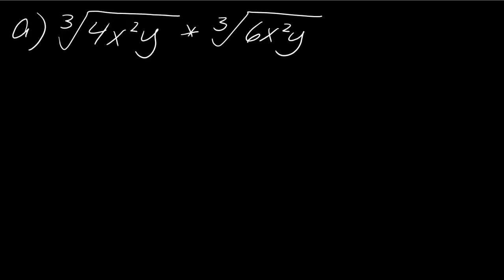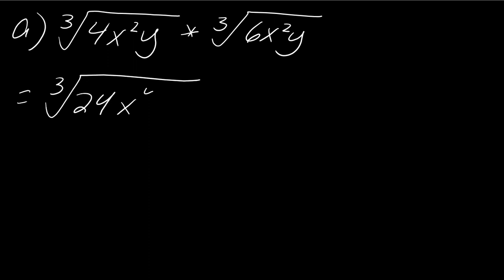Let's say that I've got these two cube roots. Since they're both cube roots, I can just straight up multiply them together. So 4 times 6 is 24, and then x squared times x squared will become x to the fourth, and y times y will be y squared.